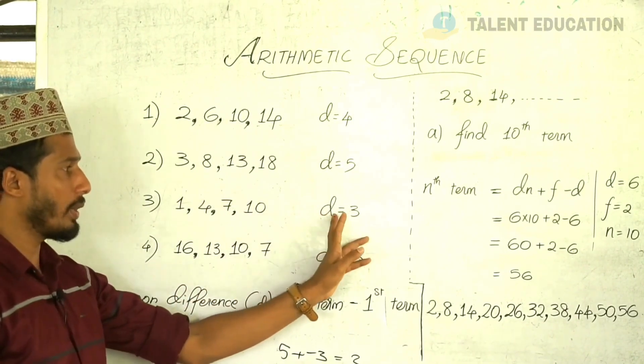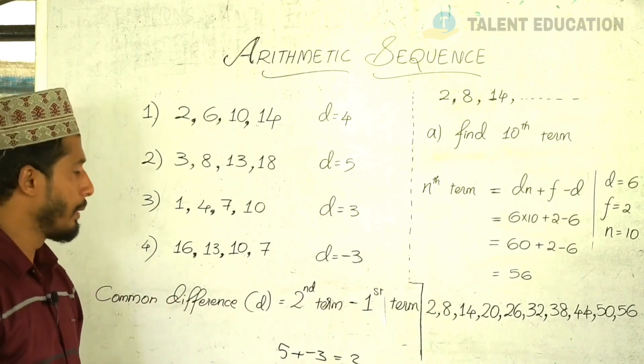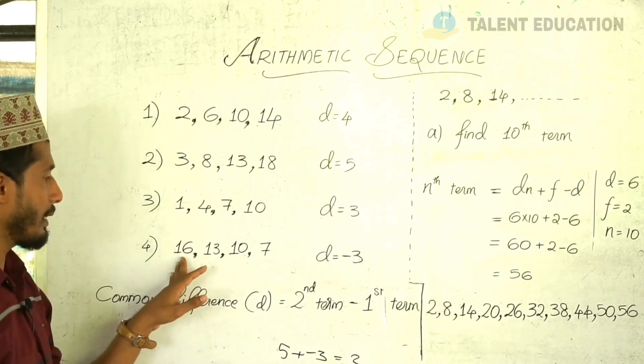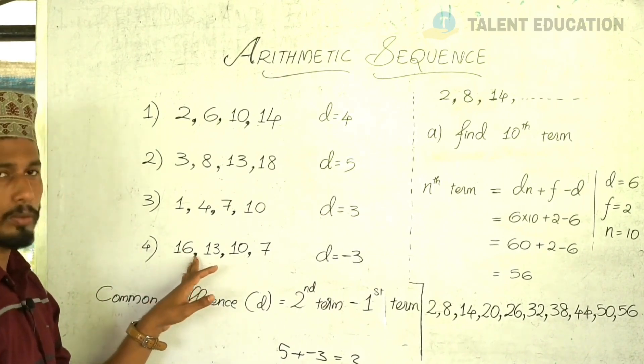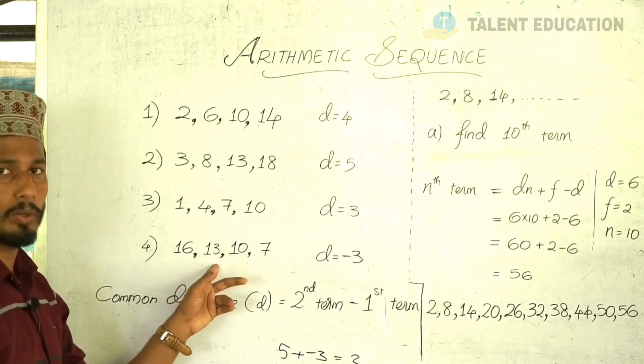If you multiply 3, then you multiply 3. Now, the example is 14. In 14, there is minus 3.